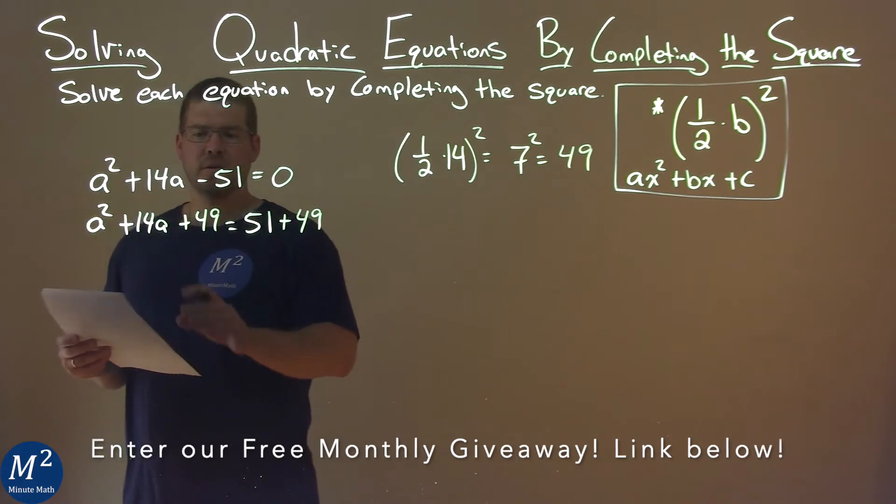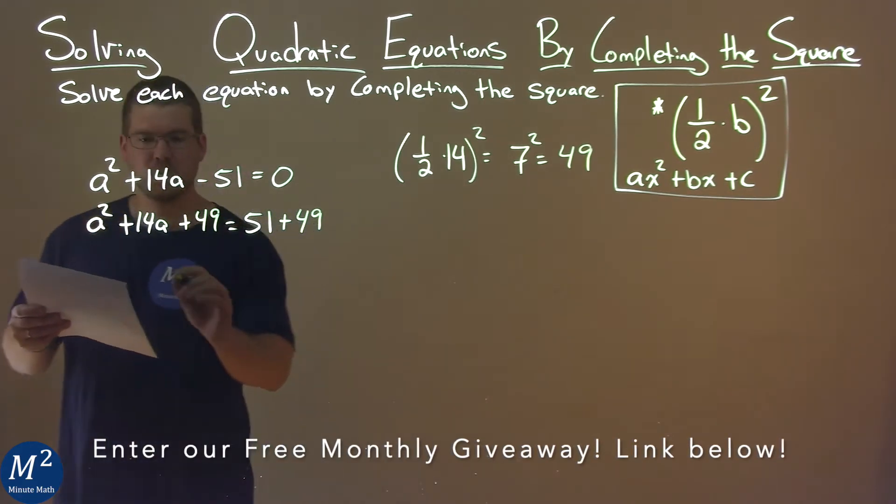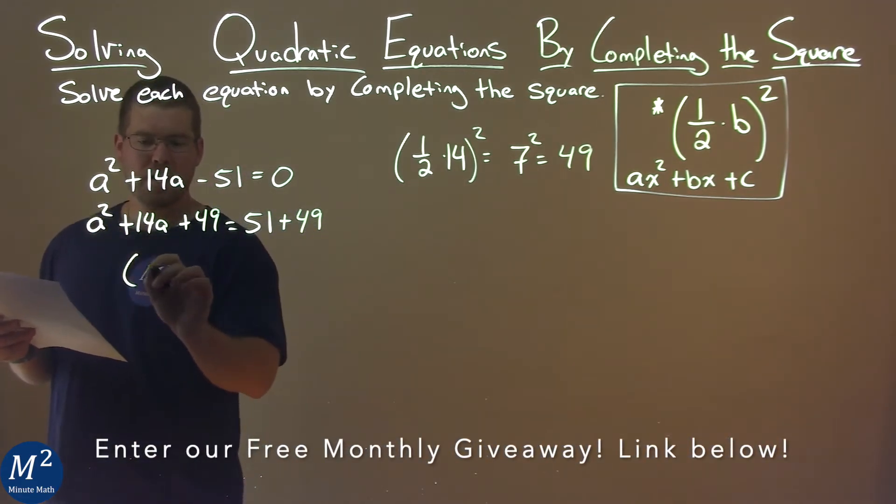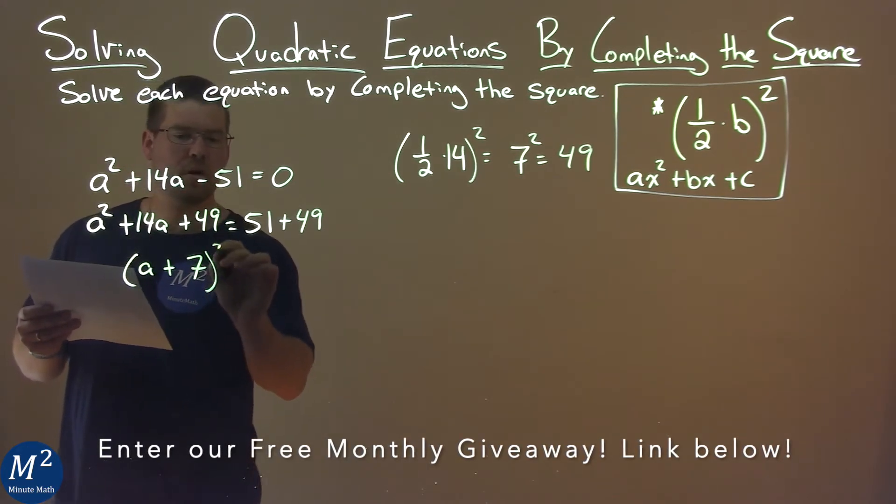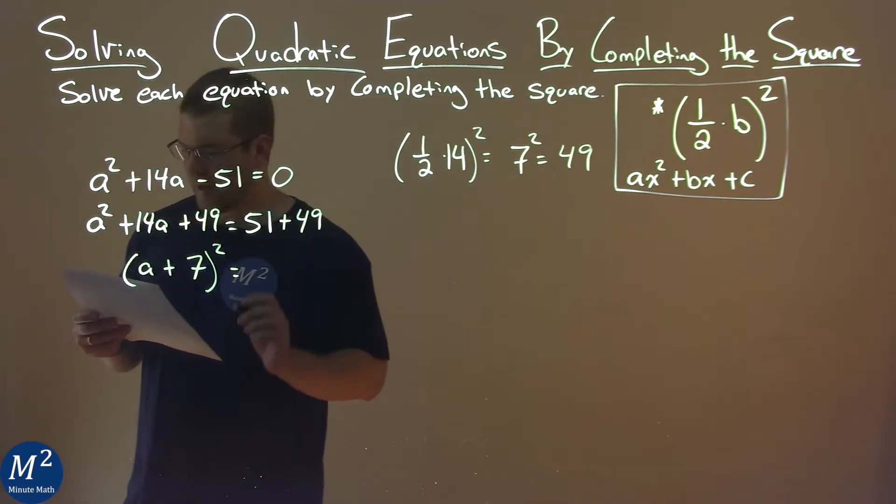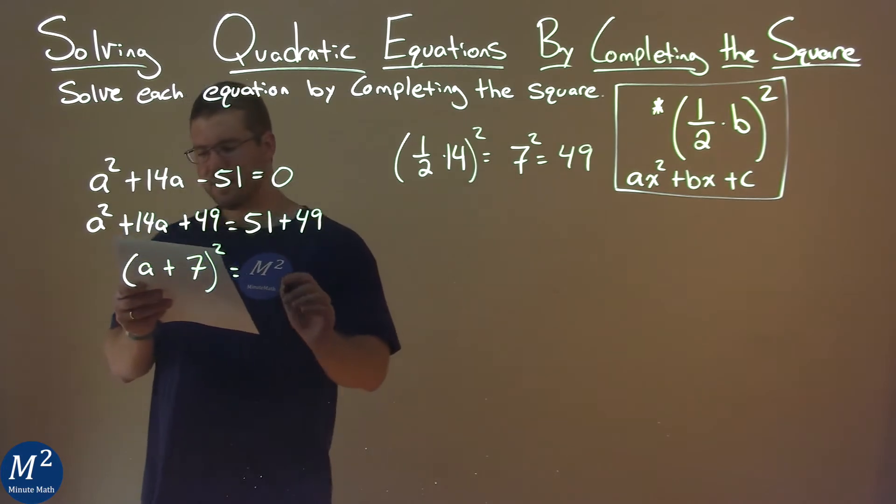Now from here, the left-hand side is a perfect square. That's going to be a plus 7, all squared. Right-hand side, 51 plus 49 is 100.